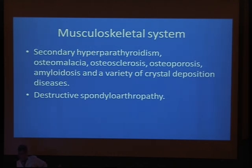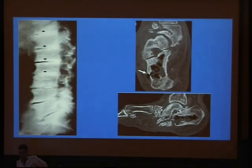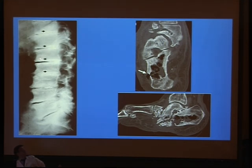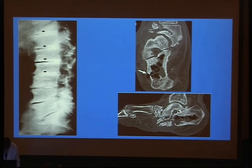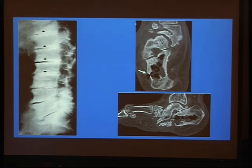We usually see general skeletal changes in young patients with long-term hemodialysis. For example, this X-ray of the spine shows advanced degenerative changes in a patient with long-term hemodialysis. You can notice sclerosis, the rugger-jersey vertebra appearance, erosion of the spine, calcification of the intervertebral disc secondary to hyperparathyroidism.